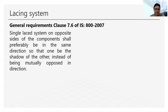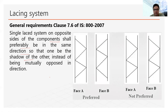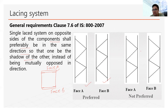The next requirement states that a single lacing system on opposite sides of the main components shall preferably be in the same direction, so that one is the mirror image of the other. For example, if we have two channel sections and lacing is provided on face A, then on the opposite face the lacing should be the mirror image of face A — not in a different orientation.